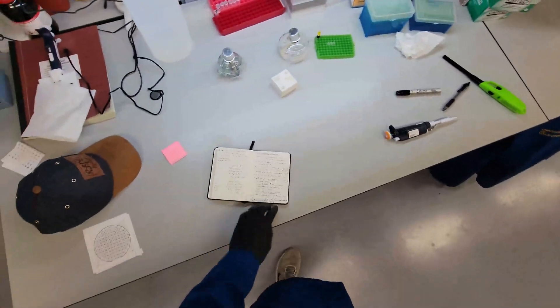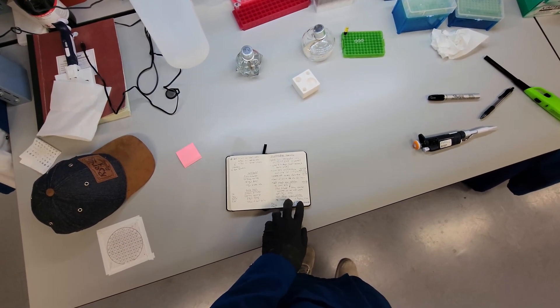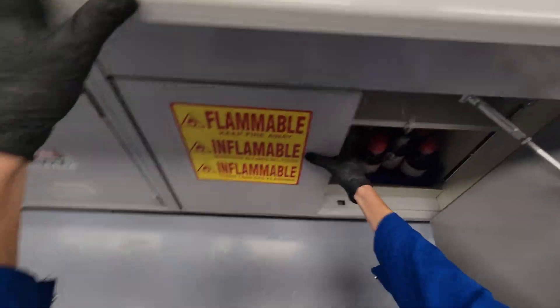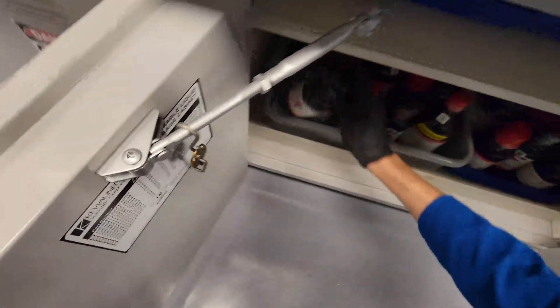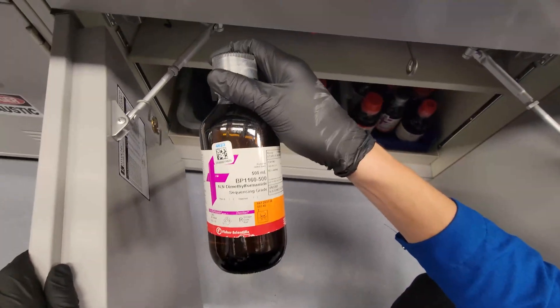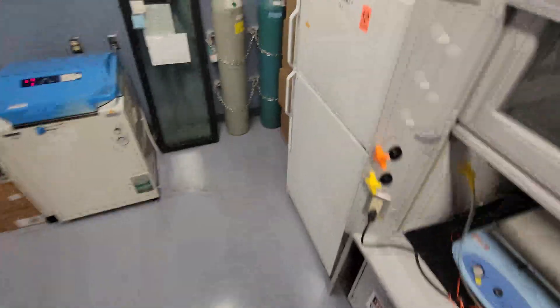We need the X-Gal solution, which is one milliliter of NN-dimethylformamide, 50 milligrams of X-Gal. I always have trouble finding this. I'm getting better. Here it is. NN-dimethylformamide. This one is sequencing grade. I don't know how much that matters. Let's get the X-Gal, 50 milligrams of X-Gal. Five zero. Oh, there it is.